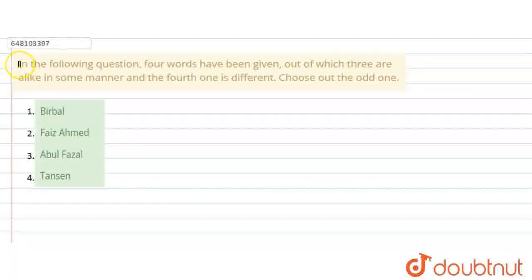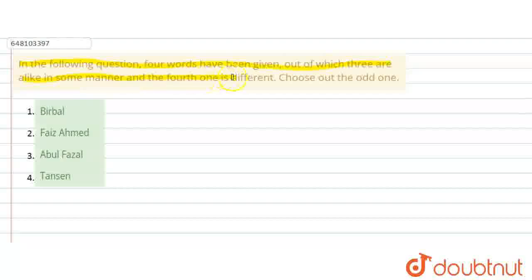The question says: in the following question, four words have been given, out of which three are alike in some manner and the fourth one is different — choose out the odd one. Options are: Birbal, Faiz Ahmed, Abul Faisal, and Tan Singh.